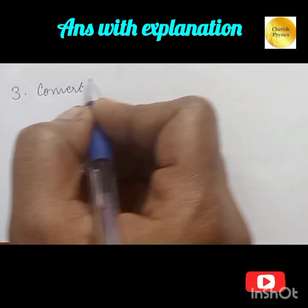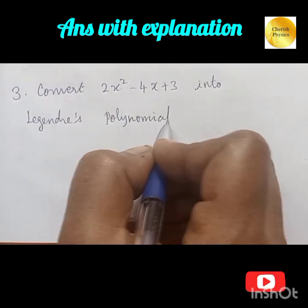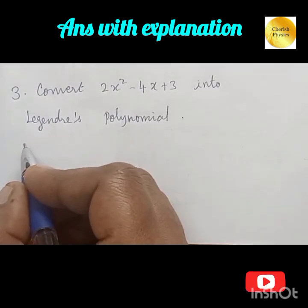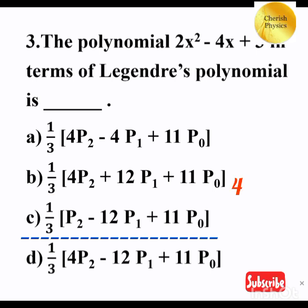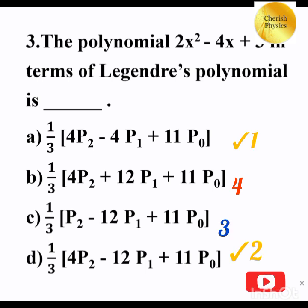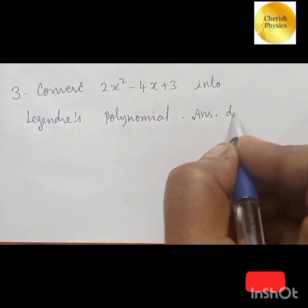Third question: convert 2x² minus 4x plus 3 into Legendre polynomial. Four options are given. If you substitute into each option it takes more time, so we have to choose the option cleverly. Option B has no negative sign, so let it be the last option. Option C's first term has no coefficient, so let it be the third option. Take A and D as first and second options.